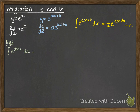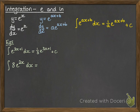Some examples. We've got e to the 3x plus 1 — that becomes a third e to the 3x plus 1. If you try to differentiate that answer, you can check that it does indeed go back to e to the 3x plus 1. Remember, you can always differentiate to check your integrations. And then if we have something like 8e to the 2x, we get a half from that power of 2x, multiplied by the 8e to the 2x, and then you can simplify that to a 4 at the front.